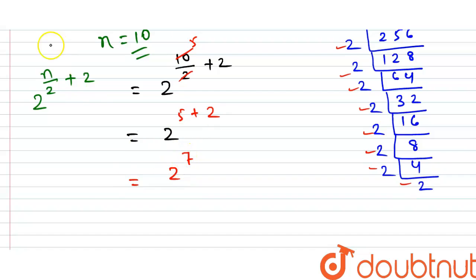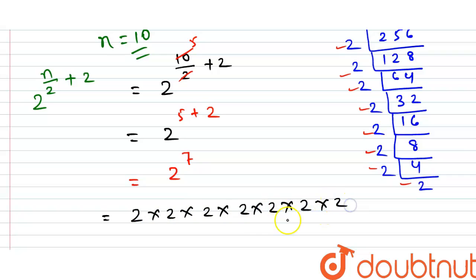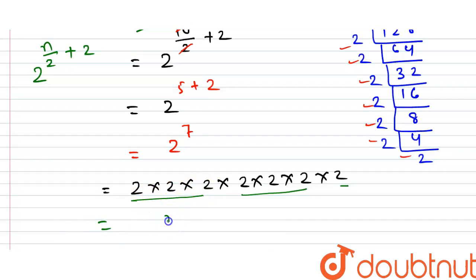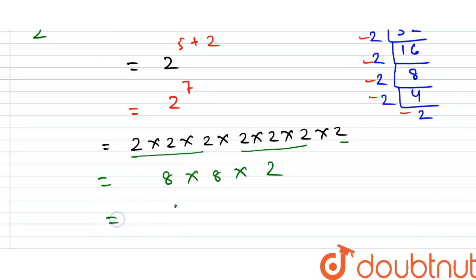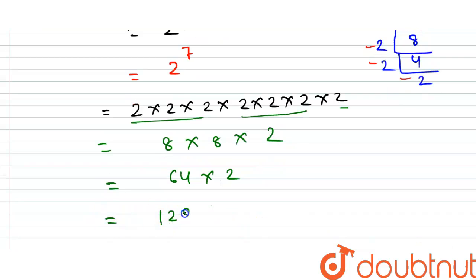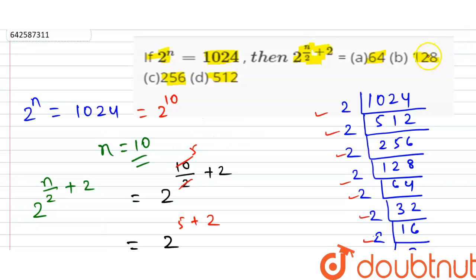So 2 to the power 7 equals 2 multiplied seven times: 2 × 2 × 2 × 2 × 2 × 2 × 2. This equals 64 × 2, which is 128. The answer is 128, which corresponds to option B.